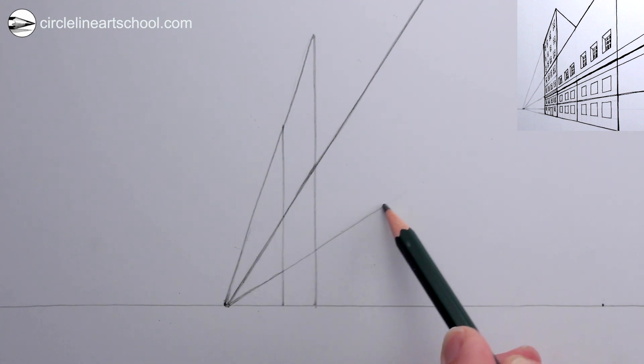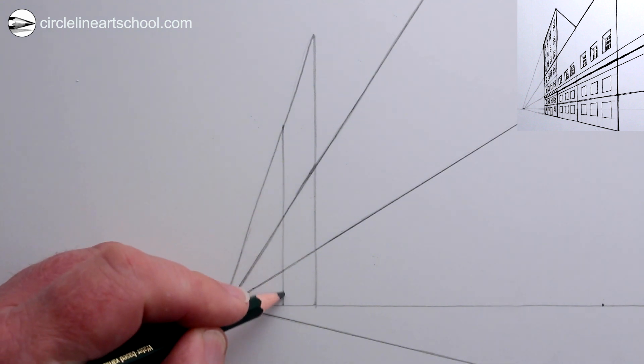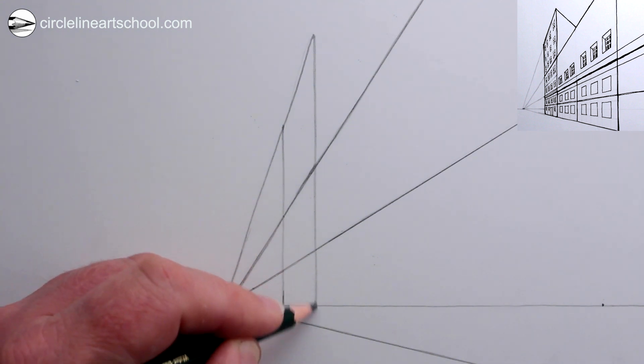We need a line from the vanishing point going to the right but also lower than the horizon. This will be for the baseline of the building. It's lower than the horizon because the horizon is really far away and anything lower than horizon is nearer to us.